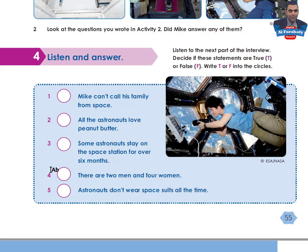Listening 5.3. Is there anything you don't like about being in space, Mike? I miss my family a lot, but I can send them emails and even call them from space. That's very exciting, and they send me my favourite food. What's that? Peanut butter — all the astronauts love it. How long do the astronauts stay on the space station? Usually four or six months, but never more than six months. How many astronauts are there on the space station now? There are six of us: four men and two women. One last question — do astronauts wear space suits inside the space station? No, only when we go outside to do a space walk. Interesting. Thank you very much, Mike, and good luck. Thank you.